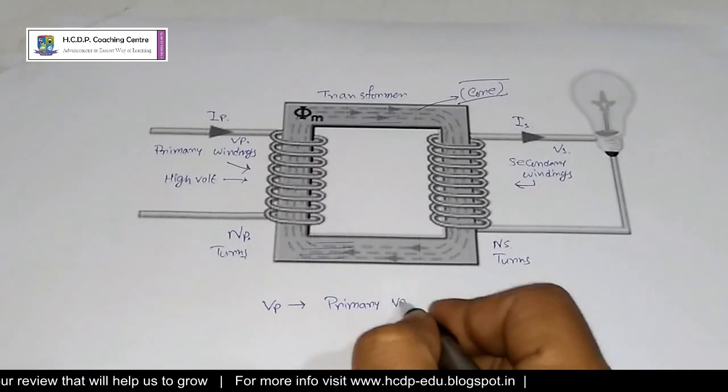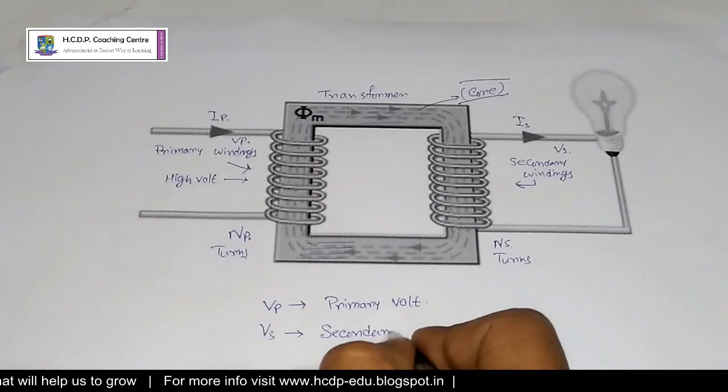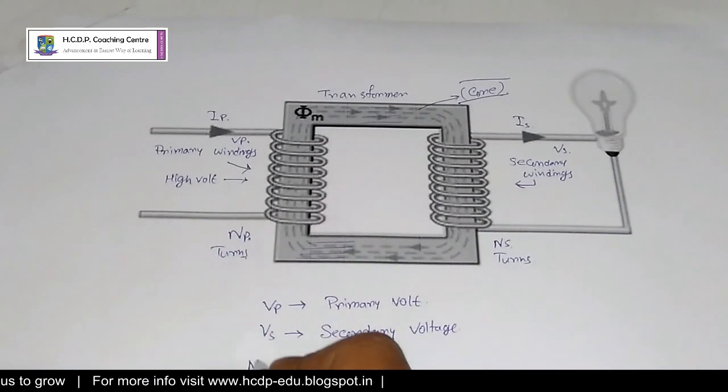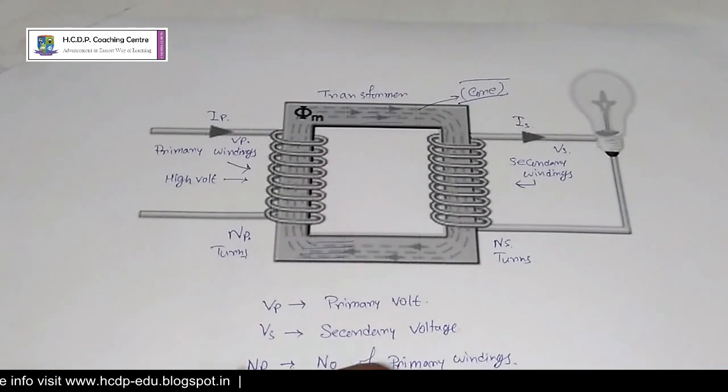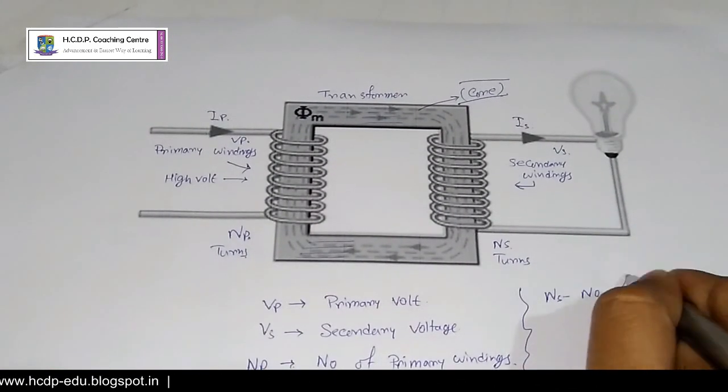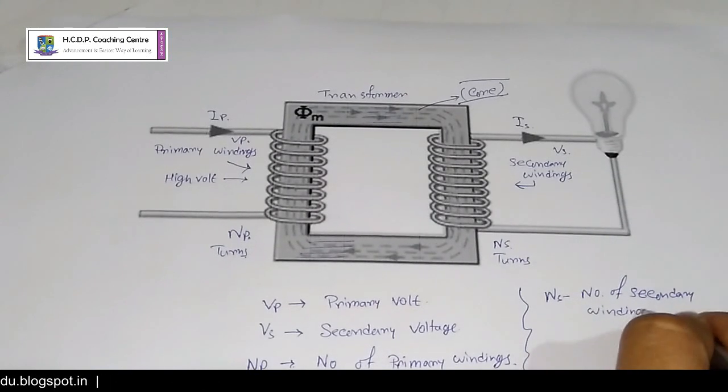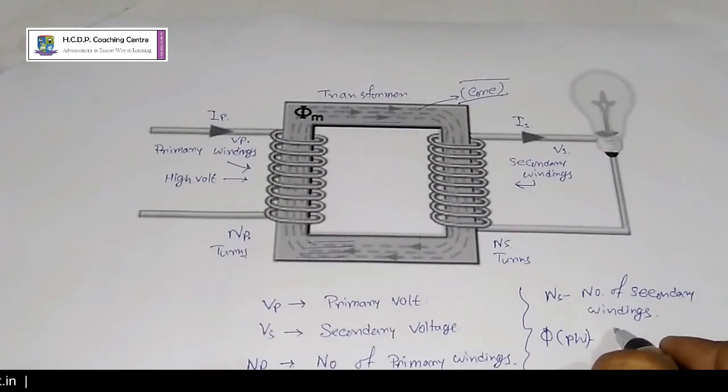As you can see, Vp is the primary voltage, Vs is the secondary voltage, Np is the number of primary windings, Ns is the number of secondary windings, and phi is the flux linkage.